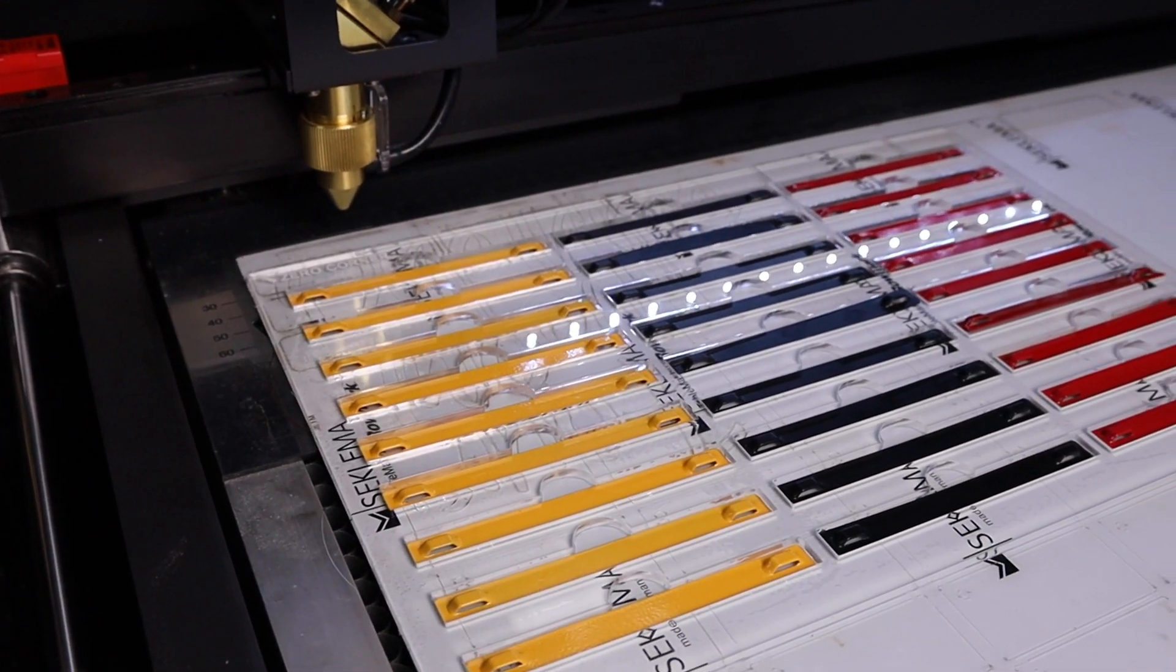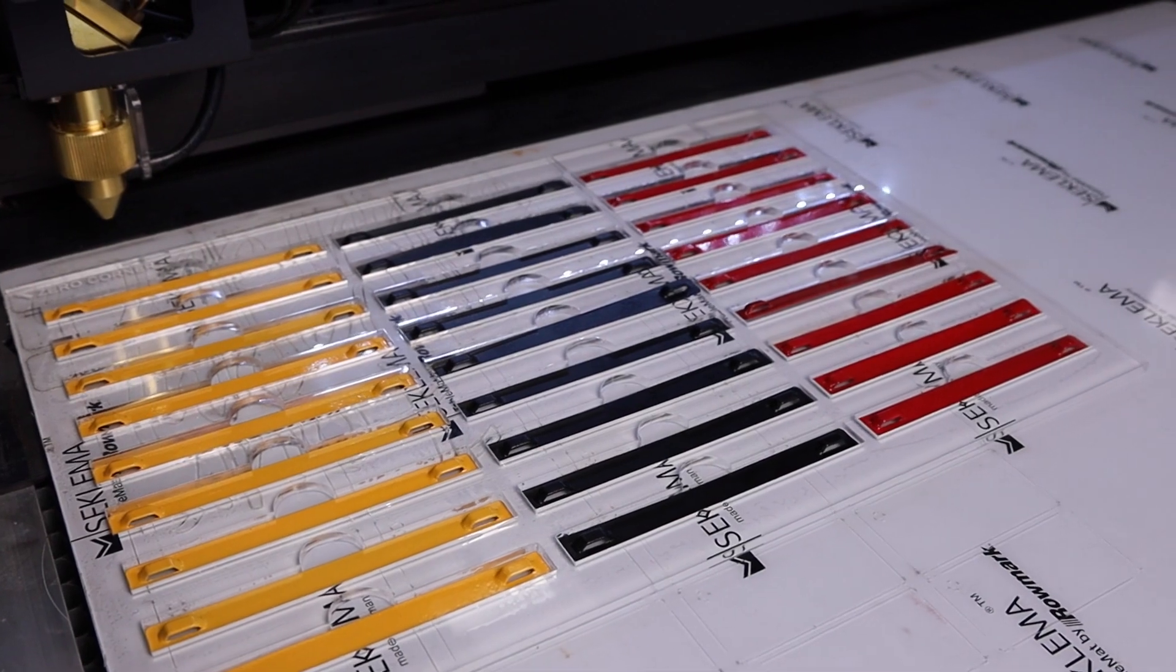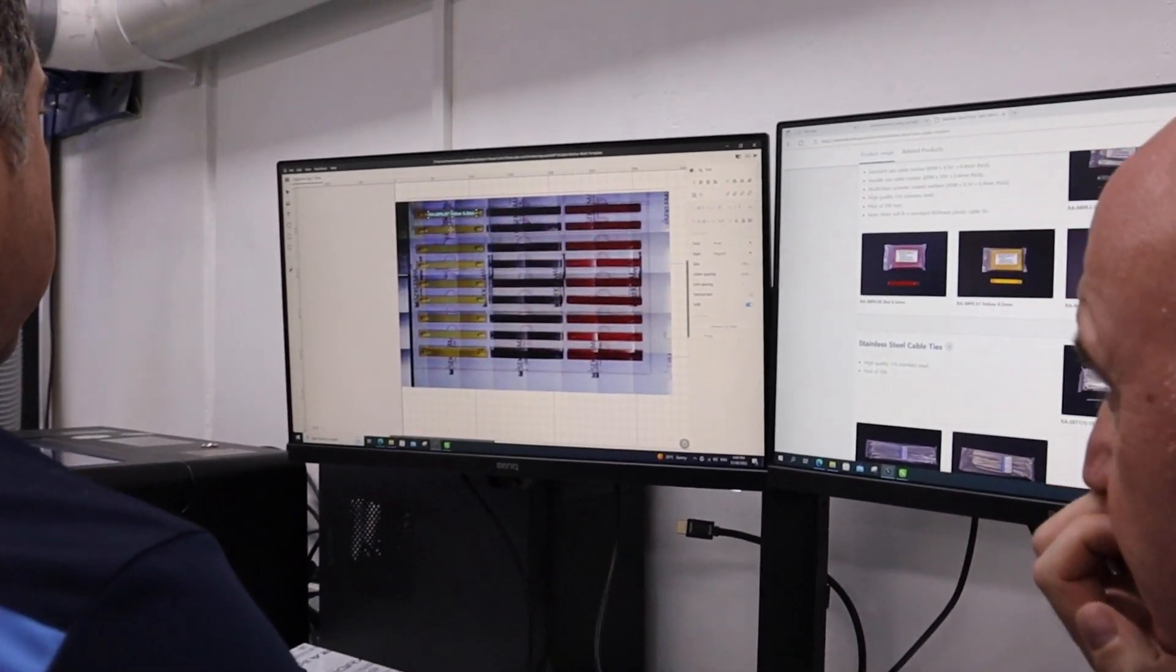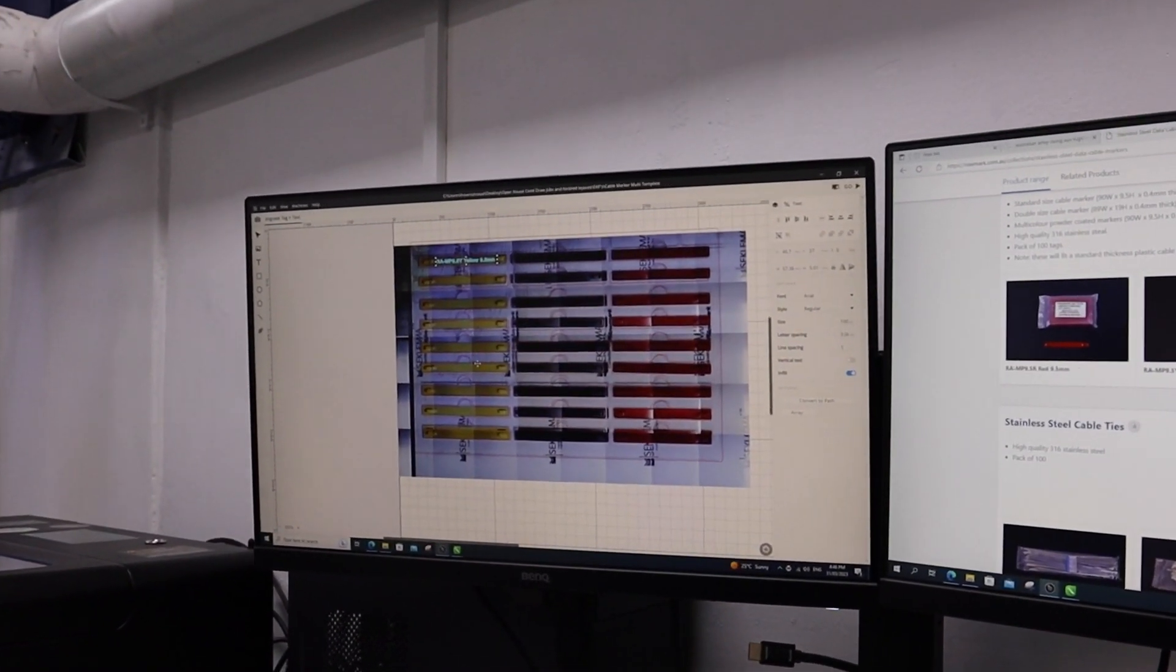Here's the Beambox Pro 50 watt engraving some colored cable tags. We're using the same template as we did with the fibre and this is how easy it is to create them in the software.